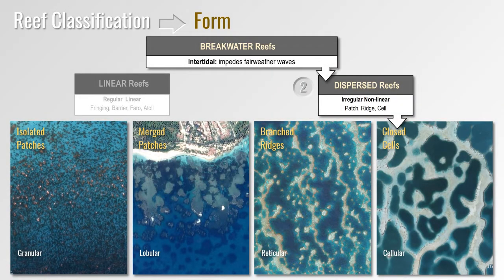The other group in the breakwater reef class are dispersed reefs, consisting of less regular or non-linear forms that tend to cover large areas. They're composed of either fields of patch reefs or networks of ridges and cells, found in lagoons but also in open water covering coastal shelves and offshore banks. We've identified four main types: granular reefs composed of fields of uniformly spaced patch reefs; lobular reefs which are fields of merged lobe-like patch reefs; reticular reefs which are fields of sinuous or branching ridges; and cellular reefs which are fields of ridges arranged into a network of cells. Today we'll concentrate only on classifying the linear breakwater reefs.